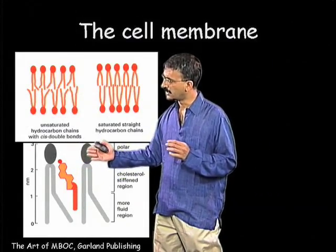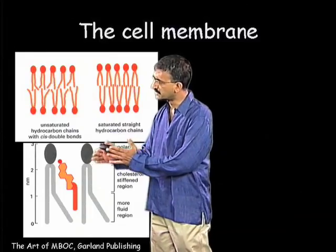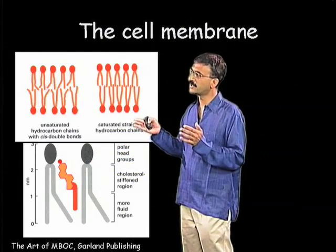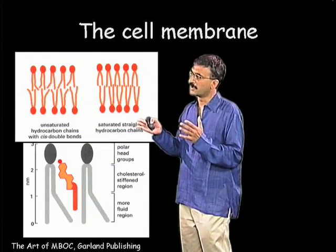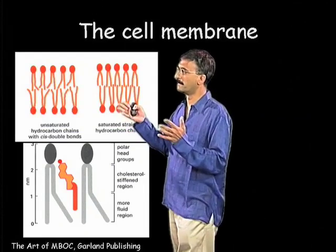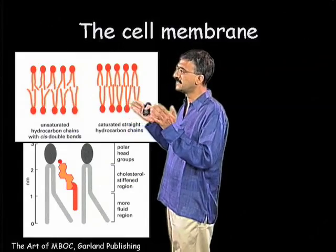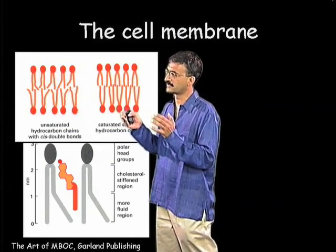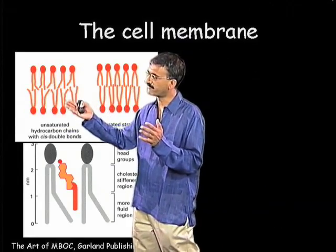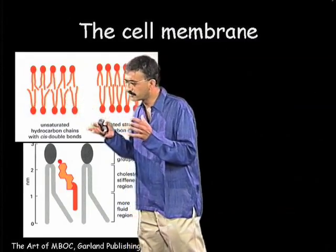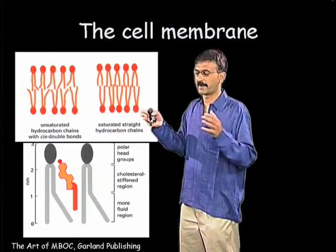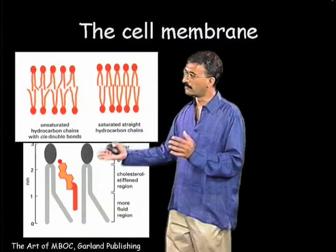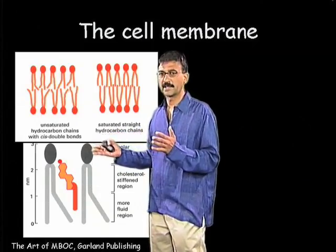Cholesterol makes lipids behave in a very unusual way when associated with them. Lipids in general have two distinct types of abilities to pack together. They form bilayers, and in these bilayers the saturated acyl chain containing lipids have a tendency to pack a little tighter, while lipids that have an unsaturated hydrocarbon chain tend to pack not as well and as compact with each other. Cholesterol is able to modify the properties of these different types of lipids in different directions.